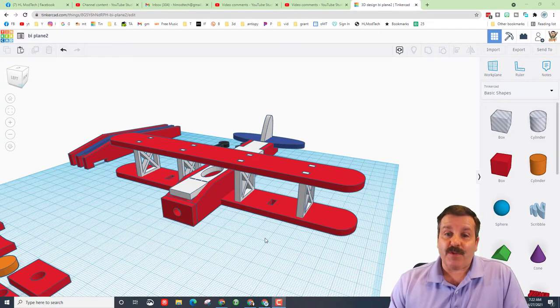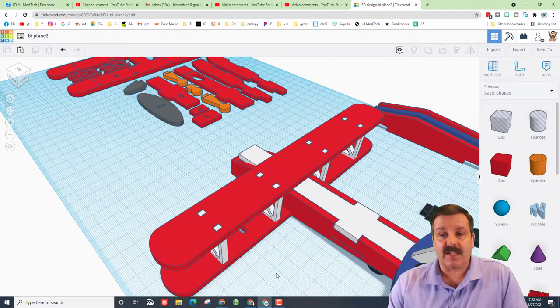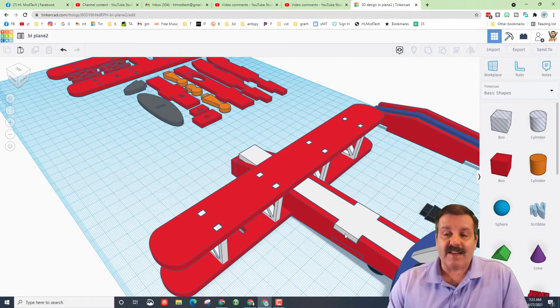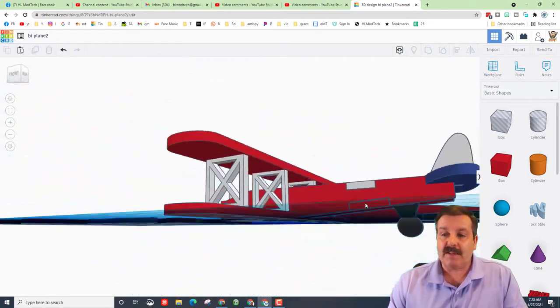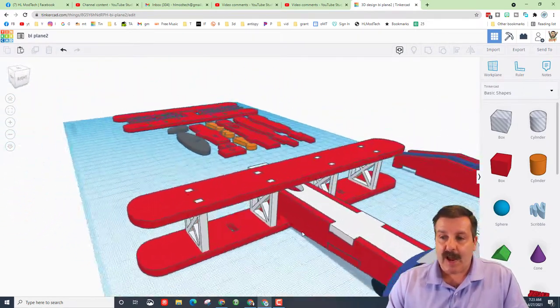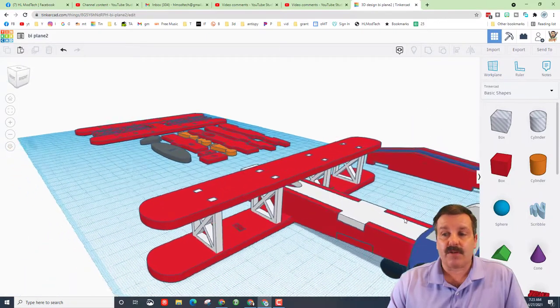First, I got to give all the credit to Heath for this idea. It was really slick. The only big things I did was I added tabs back here so these parts drop into place. I did it for the bottom, the top, and I also made it so the horizontal stabilizer and the vertical stabilizer attach.